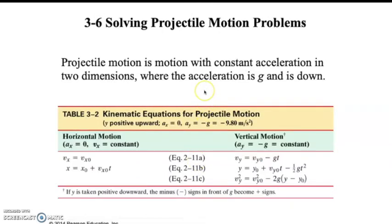When solving projectile motion problems, using the equations from the text, the key is to make y positive upward, acceleration in x equal to zero, and acceleration in y equal to negative g, or negative 9.8. If we can know those things, we can solve a lot of projectile problems pretty easily. The key is to keep the two dimensions separate — the horizontal and the vertical, the x and the y.